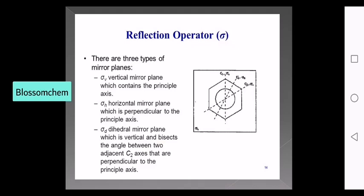Sigma d is vertical and bisects the angle between adjacent C2 axes. The mirror plane is called the dihedral mirror plane. This is illustrated in a diagram of the focal axis.